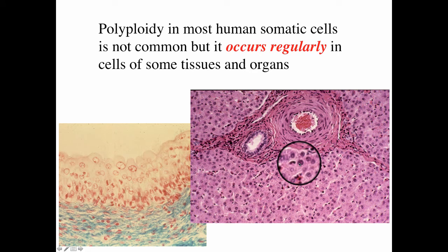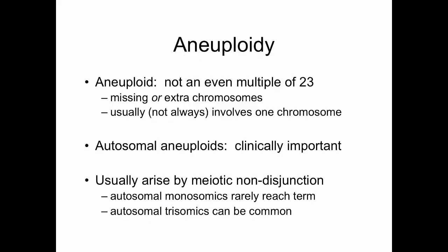Here you can see some liver cells that have very large nuclei. An aneuploid cell is not an even multiple of 23 chromosomes — there's a missing or an extra chromosome. Aneuploidy usually, but not always, involves one chromosome. Autosomal aneuploids are clinically important and usually arise by meiotic nondisjunction. Autosomal monosomes rarely reach term, while autosomal trisomies can be fairly common.